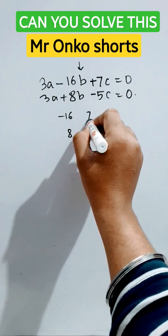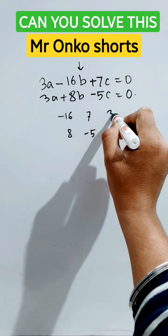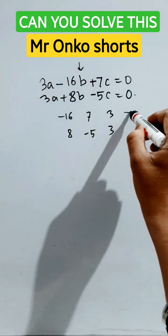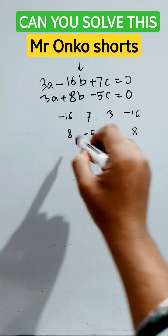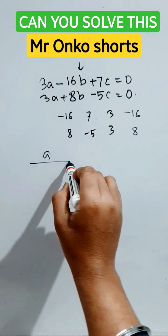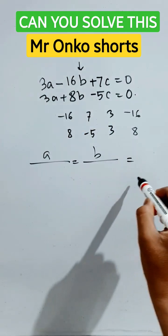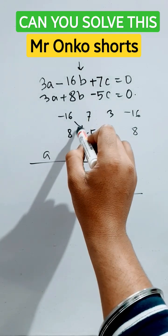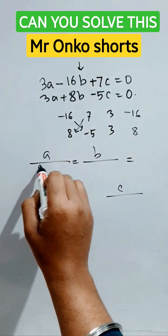Then from c, then from a, and again from b. Now we have to write a divided by equals to b divided by equals to c divided by. Now cross multiply — this minus this.